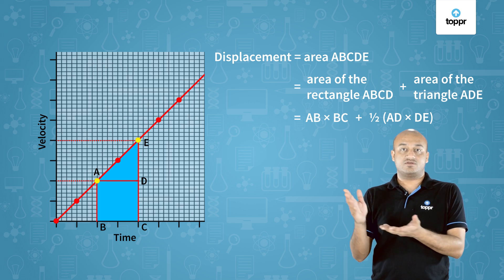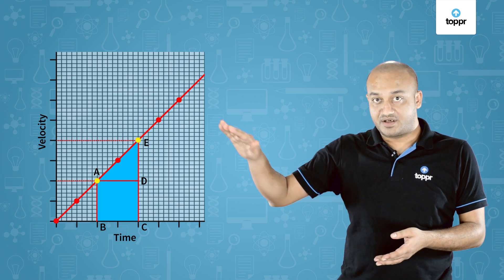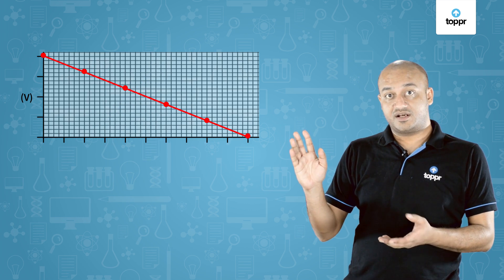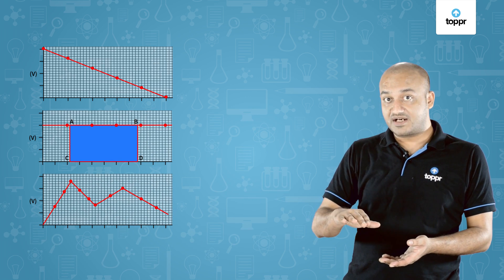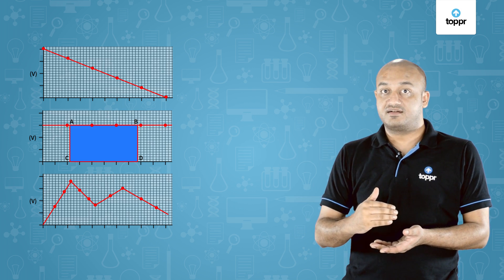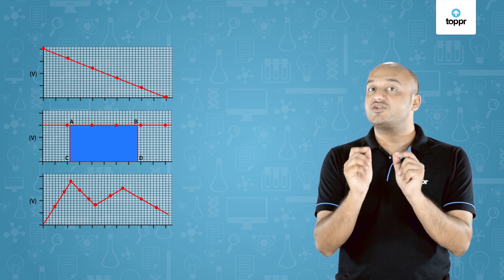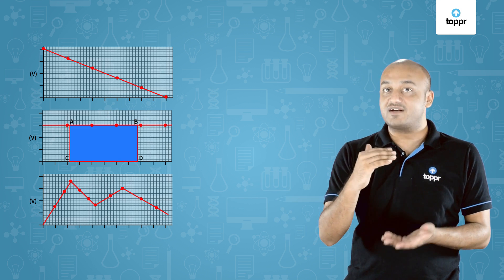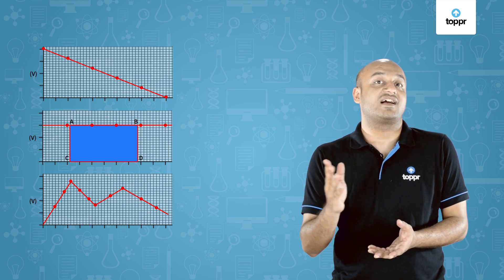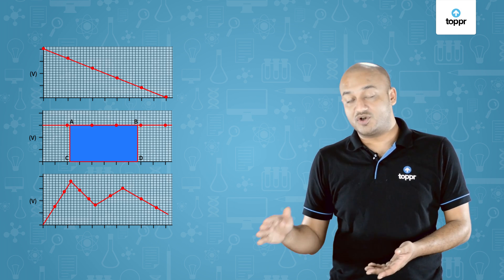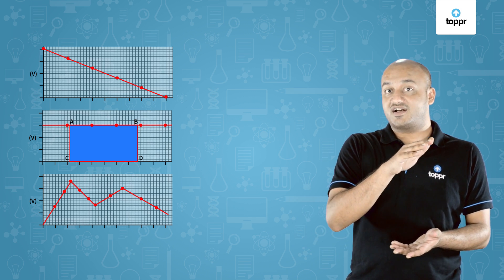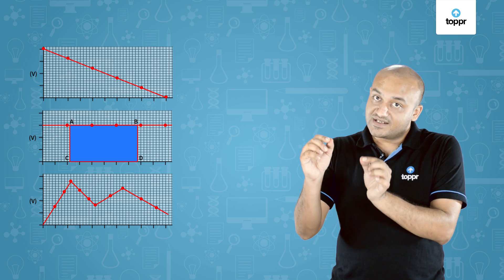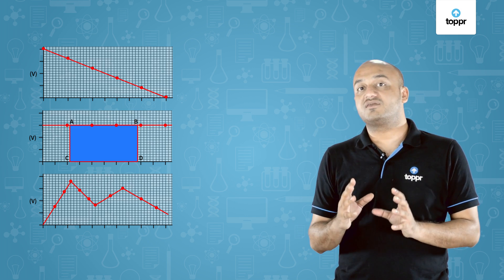Velocity time graphs need not always be a straight line going up. It could be a line coming down — that is the case where velocity is decreasing, which is deceleration or retardation, but still uniform retardation. A horizontal straight line means velocity is constant and acceleration is zero. A line going up and down means there is acceleration followed by deceleration repeatedly. But in all these scenarios, the area beneath any two chosen points gives us the value of the displacement.